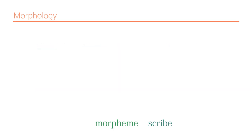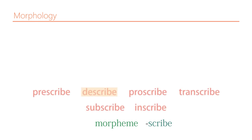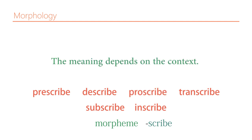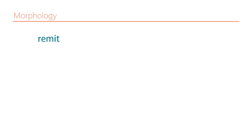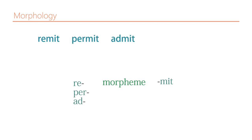For example, '-scribe' in this sense means 'write,' but when you say 'describe' it could refer to an oral description. And 'proscribe' means to denounce, condemn, or prohibit — it doesn't have anything to do with writing. So the meaning depends on the morphological context. Similarly, consider 'remit,' 'permit,' 'admit,' 'transmit,' and 'commit' — the morpheme '-mit' appears in all of them.